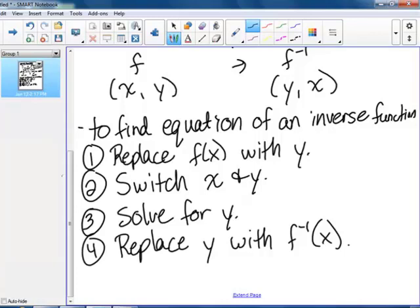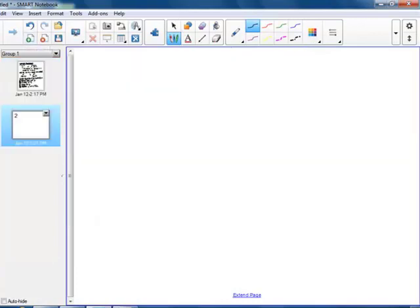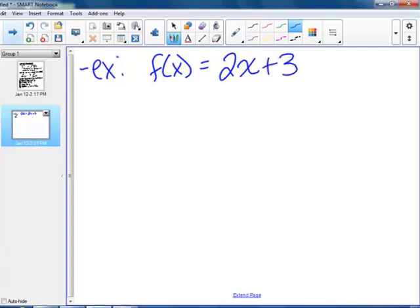We're going to do an example. We're going to come up with an equation, then we'll graph them to compare. So let's say my original function f(x) is 2x plus 3. So first, to come up with an equation, remember these steps. My first step, replace f(x) with y. y equals 2x plus 3.